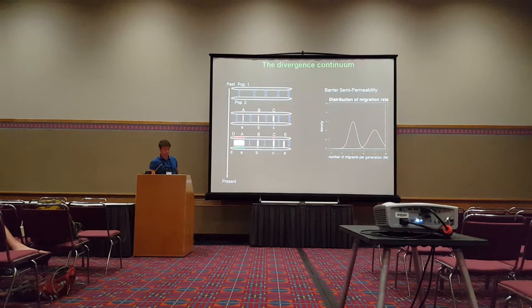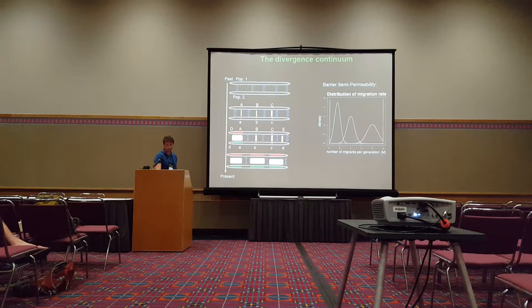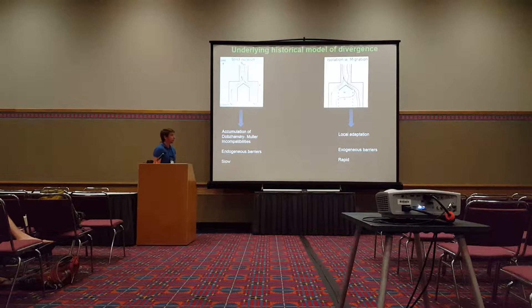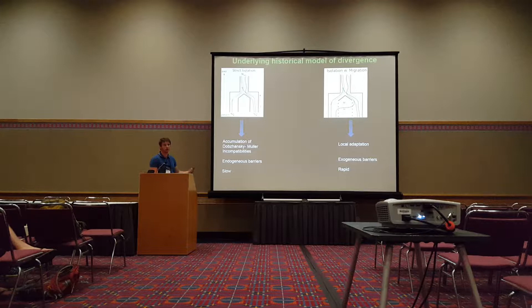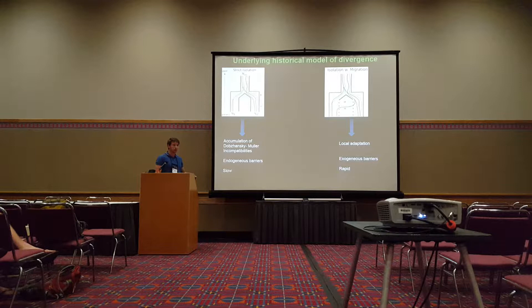One question relating to these barriers and to islands of divergence is under which geographic conditions do they arise. There are two major models of divergence that are often described: a model of strict isolation, which argues that divergence occurs through the accumulation of genetic incompatibility and endogenous barriers — a slow process — as compared to a model of isolation with migration, which suggests that isolation emerges through the action of local adaptation and mainly exogenous ecological barriers, making the divergence process quite rapid.